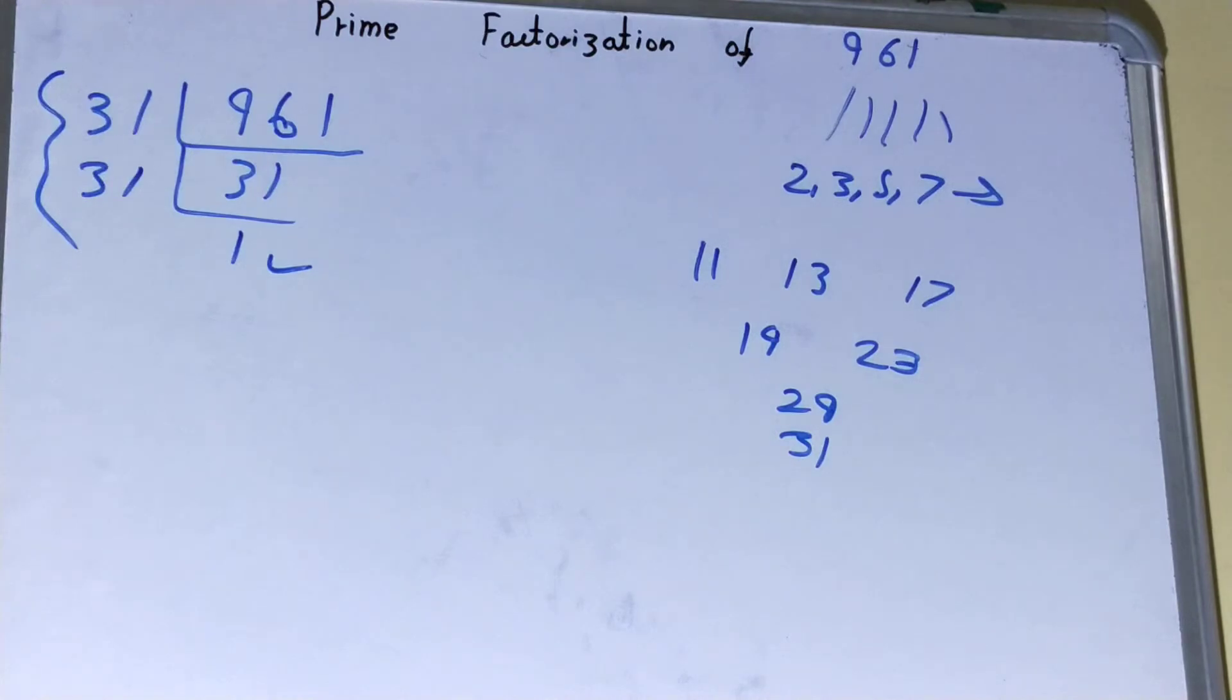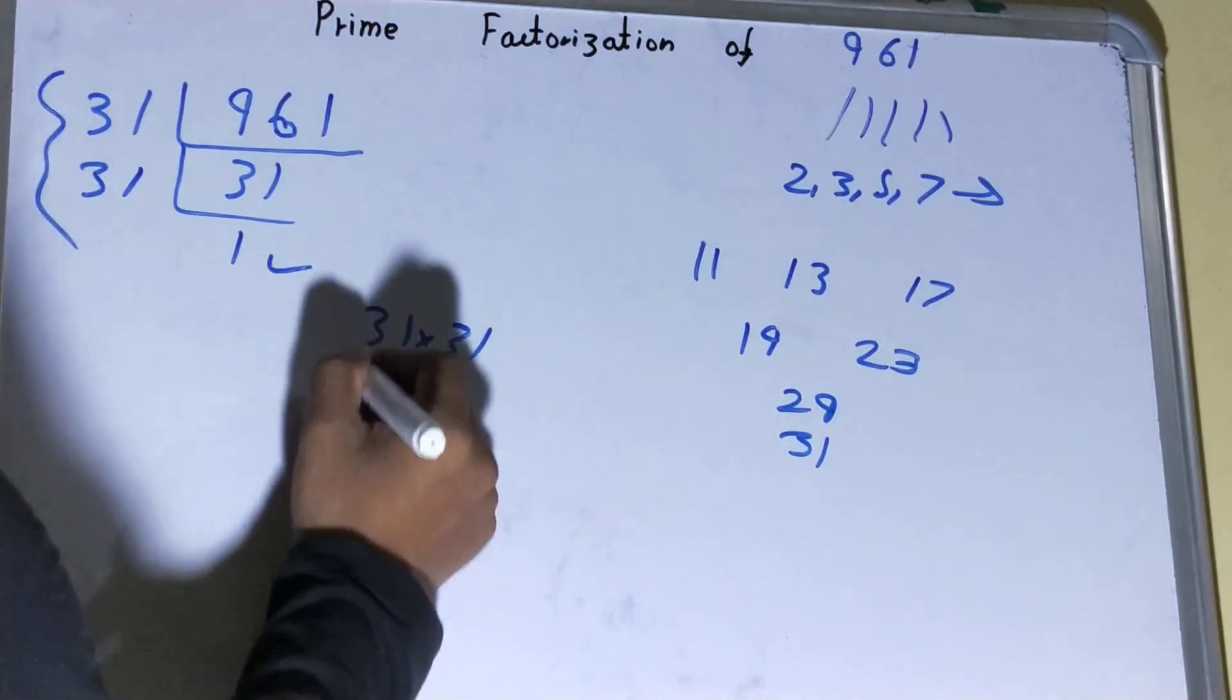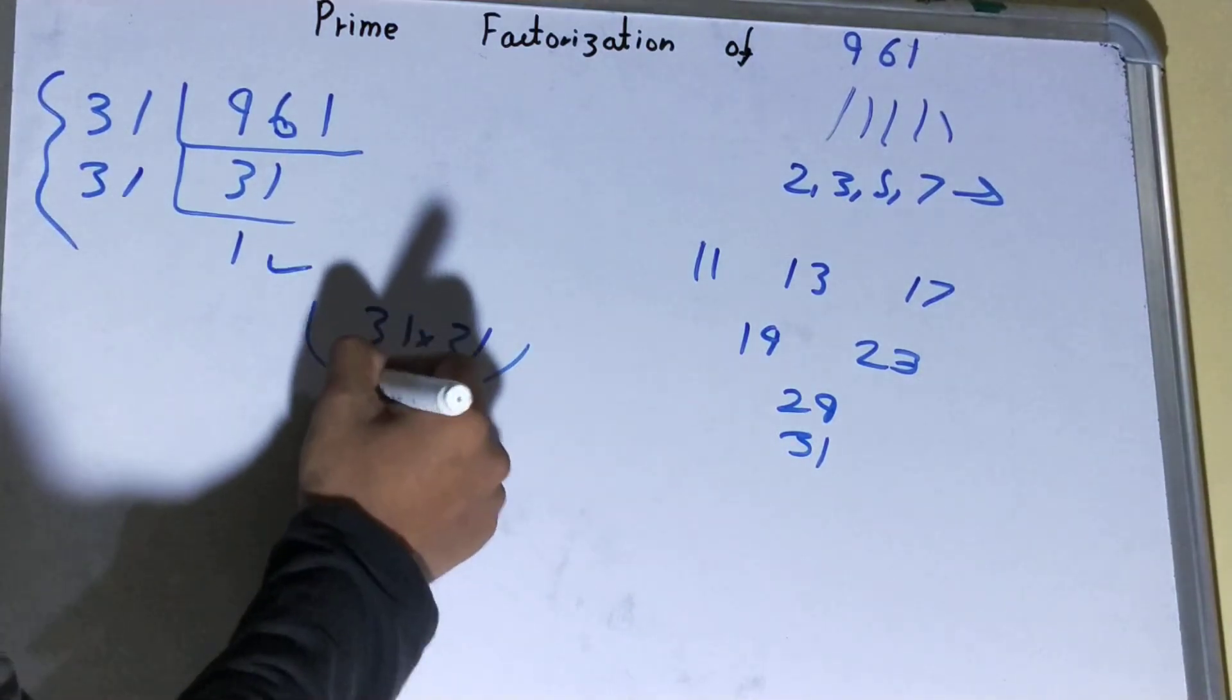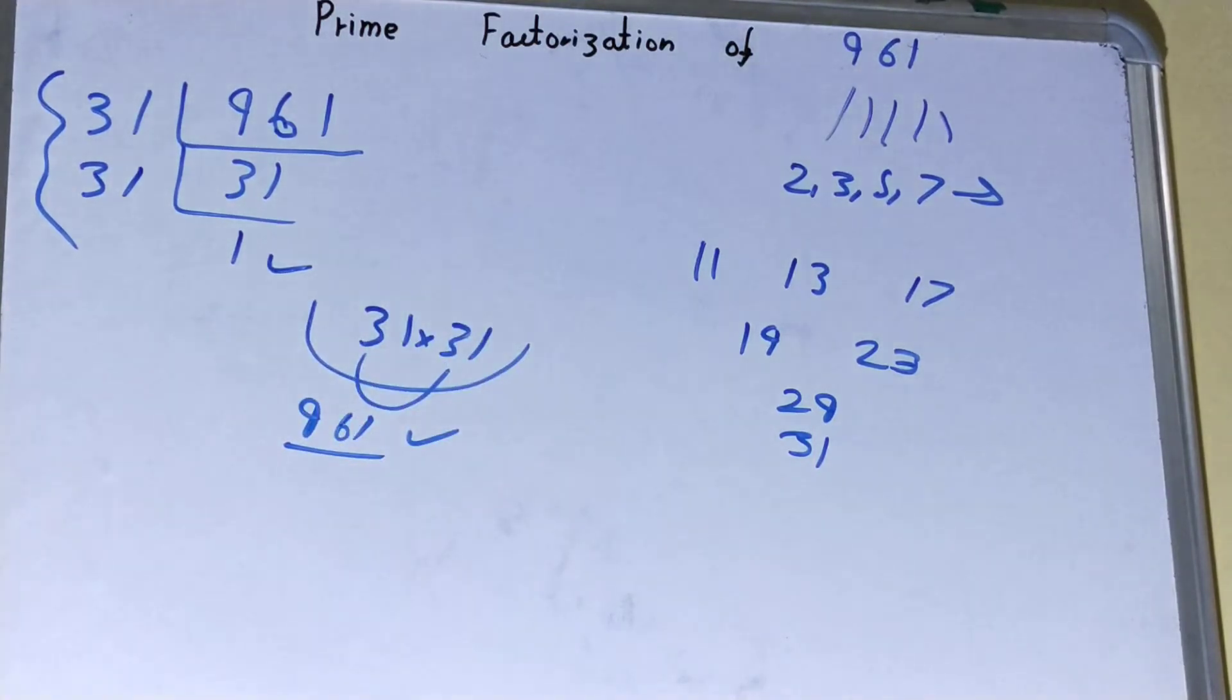the factors on the left hand side will be the set of prime factors for the number 961, that is 31 into 31. If you want to check whether it is right or not, you can multiply them. If you're getting the number back again, that means your answer is fully correct. If not, you need to recheck. Okay, so this was